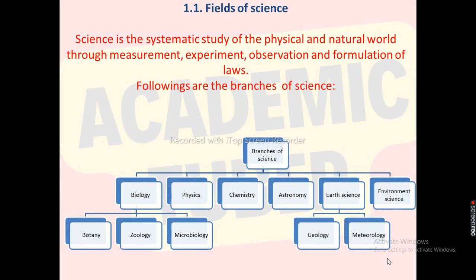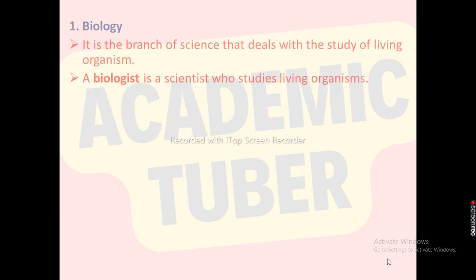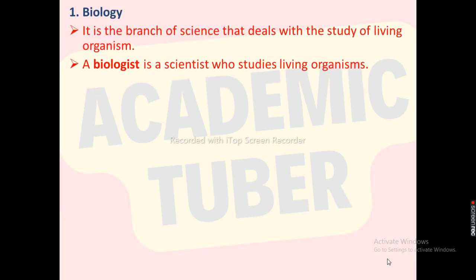Mainly, science has six branches: biology, physics, chemistry, astronomy, earth science, and environmental science. Biology has three subsets: botany, zoology, and microbiology. Similarly, earth science also has a few subsets: geology and meteorology. Now we are going to discuss the different branches of science one by one.